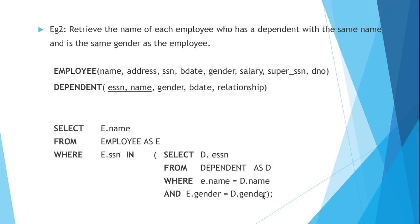Here E is a tuple variable of employee and D is the tuple variable of dependent. We are creating tuple variables because the attributes name and gender are the same for both relations. There is an attribute name in the employee relation, and the same attribute is repeated in the dependent relation. Similarly, there is an attribute gender in the employee relation and the same attribute is repeated in the dependent relation. In such cases we create tuple variables.